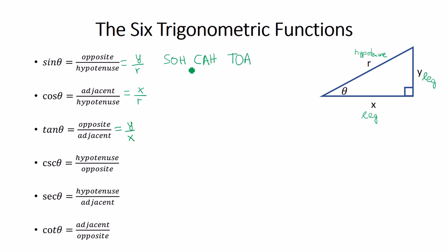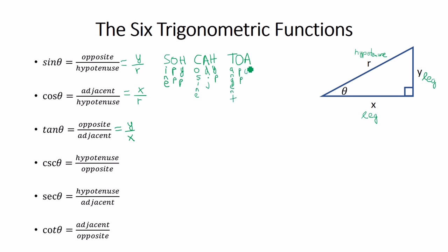What does SOH-CAH-TOA mean? S is for sine — sine is opposite over hypotenuse. CA: C is for cosine — cosine is adjacent over hypotenuse. And TOA: T is for tangent — O is opposite, A is adjacent — because tangent is opposite over adjacent. You can use this chant to help you remember these first three trig functions.